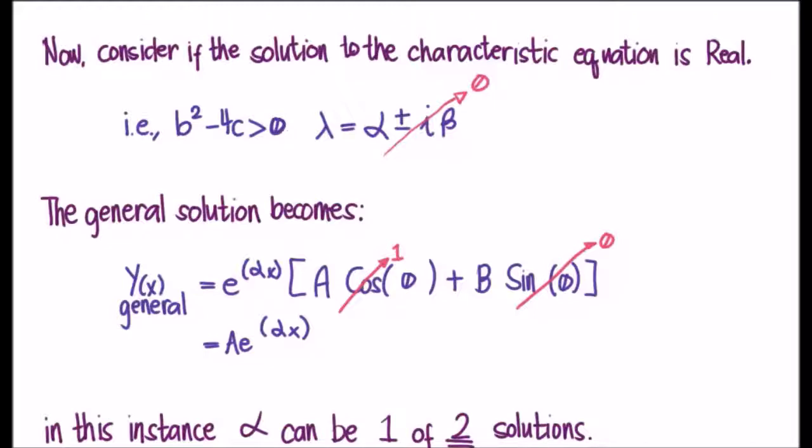And if you plug that into the general solution which we already saw, we'll see, of course, the beta is going to have sine of naught is naught, the cosine of naught is 1, and we're going to be simply left with a e to the alpha x.